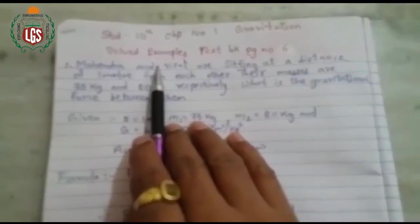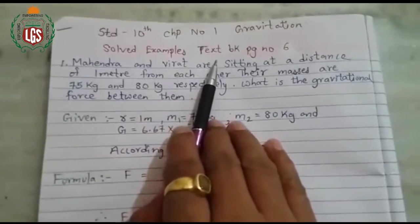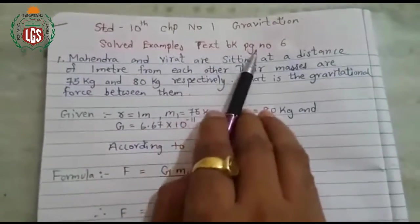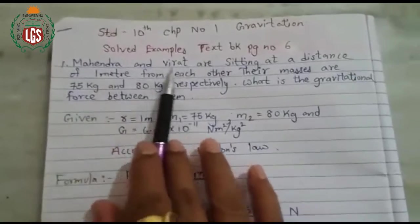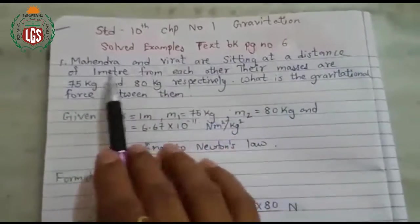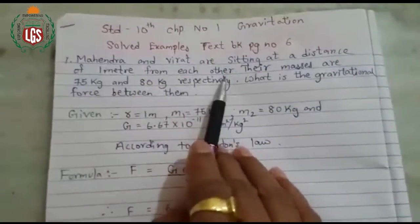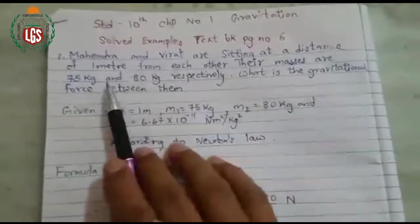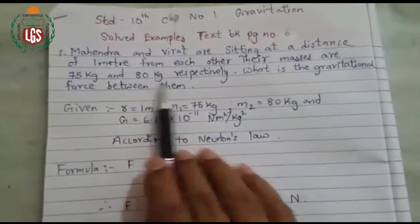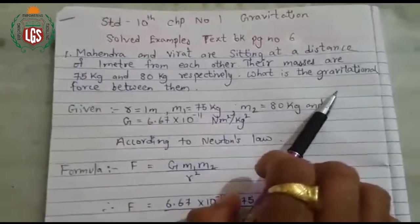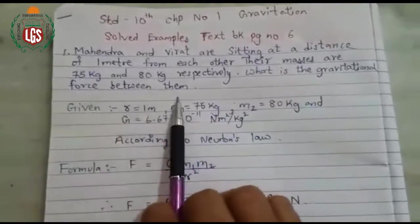We are solving now a short example from your textbook page number 6. Short example first: Mahendra and Virat are sitting at a distance of 1 meter from each other. Their masses are 75 kg and 80 kg respectively. What is the gravitational force between them?